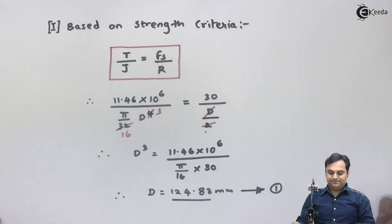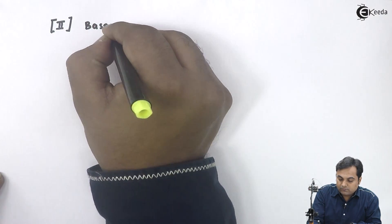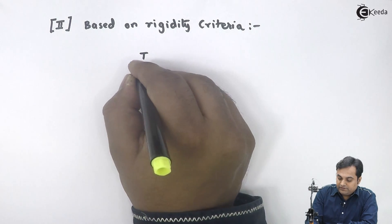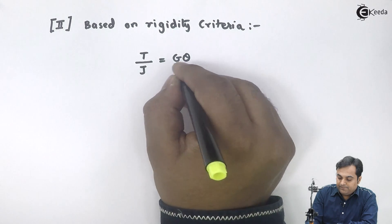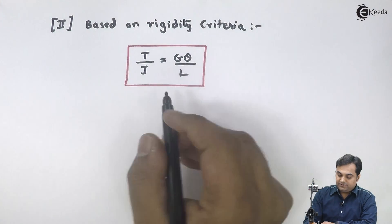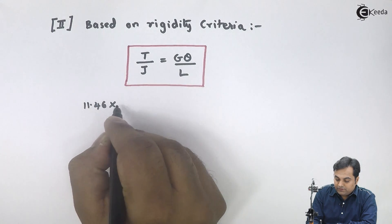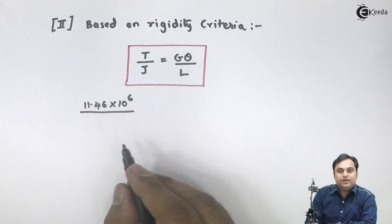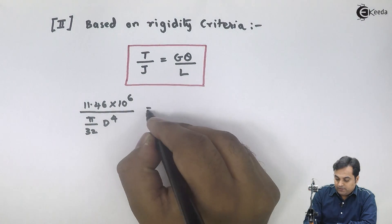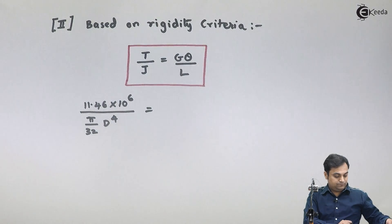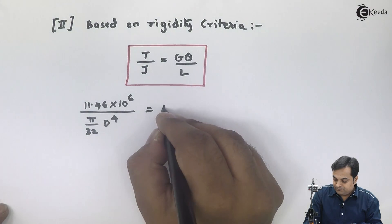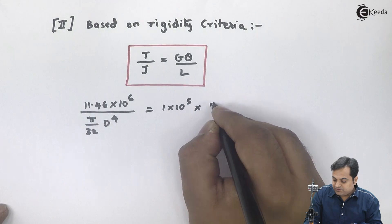Now I will use the rigidity criteria. Based on rigidity criteria, the formula is T/J = Gθ/L. The value of T is 11.46×10⁶ N·mm, J is π/32 × d⁴ for a solid shaft, G is 1×10⁵ N/mm², and theta is 1 degree, so it is π/180 radians.